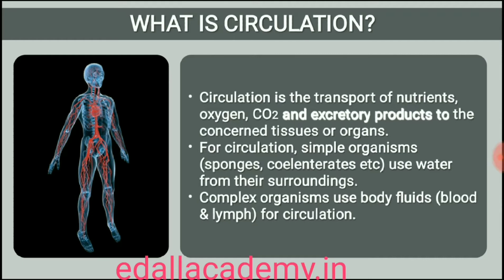Simple organisms like sponges and coelenterates circulate water from their surroundings through their body cavities to facilitate the cells to exchange these substances. More complex organisms use special fluids within their bodies to transport such materials. Blood is the most commonly used body fluid by most of the higher organisms including humans for this purpose. Another body fluid, lymph, also helps in the transport of certain substances.